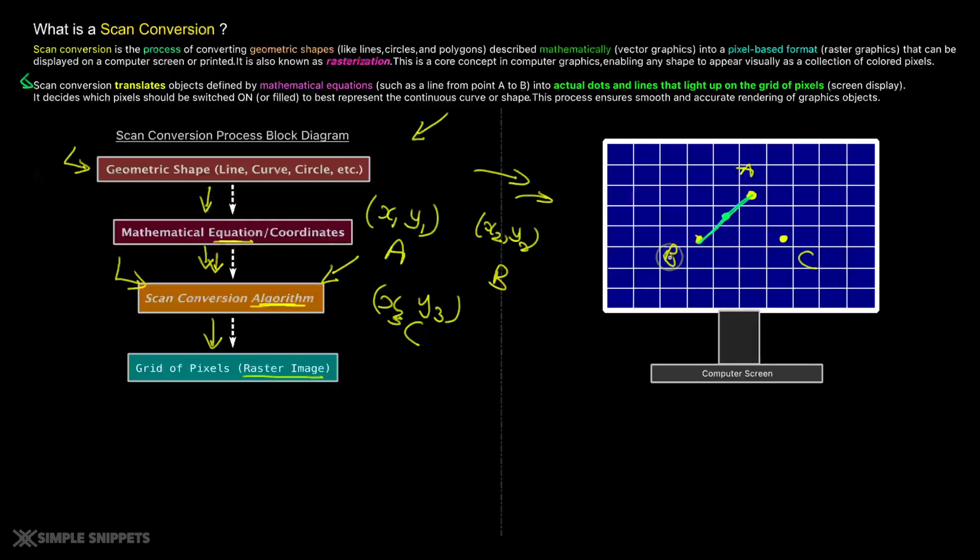So this is point C. So between point B and C, you have this pixel and this pixel to be lit up. So this algorithm will determine that and light up these pixels. And then we have one more pixel between A and C and this will be lit up. And then you will be seeing a digital image of a triangle. So that's the grid of pixels, the raster image that you see as an end result of this scan conversion algorithm.